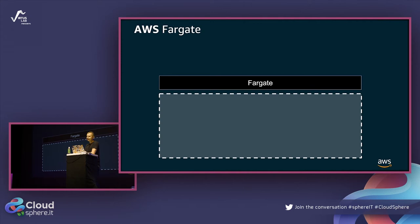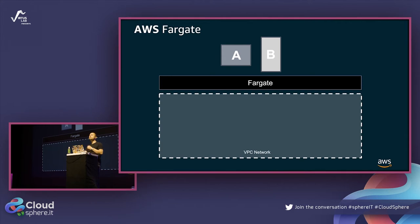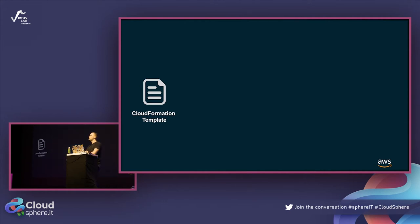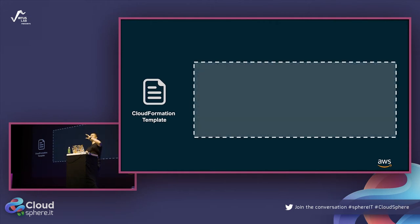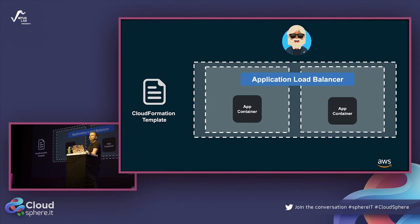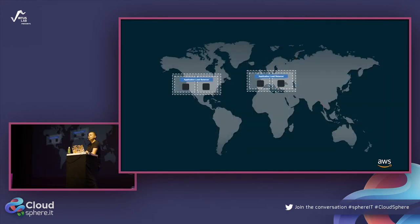In AWS there's also Fargate, which we'll use because it's serverless - no servers to manage. We just tell Fargate to deploy a container and it's deployed. I've prepared a CloudFormation template to set up everything: it creates a VPC, two subnets, an application load balancer, and a container on Fargate. Users will access the application through the load balancer. We'll deploy this in both the USA and Europe.